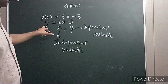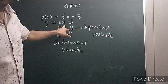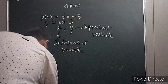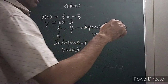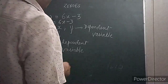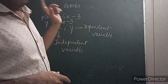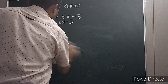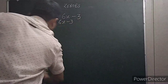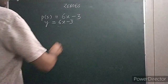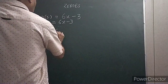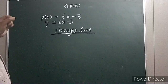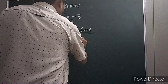Y is a dependent variable and x is an independent variable because we assign x's values and find out the value of y accordingly. X's values are shown on the horizontal axis and y's values are shown on the vertical axis. Since it is a linear expression, it is going to be a straight line, and to draw a straight line I need only two points.